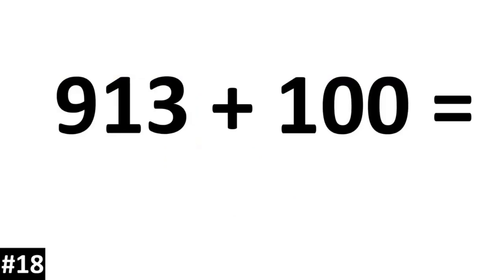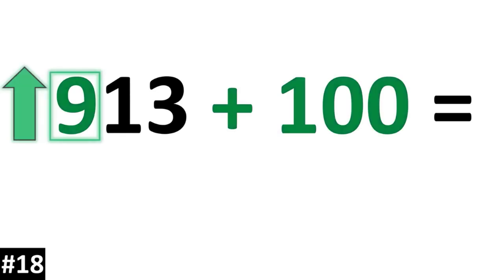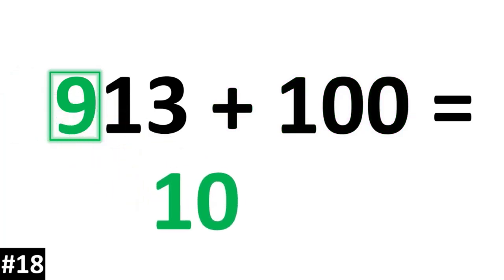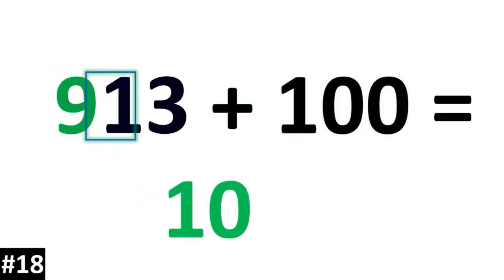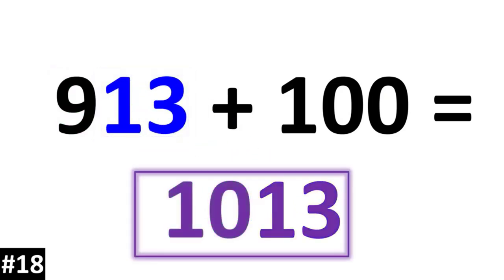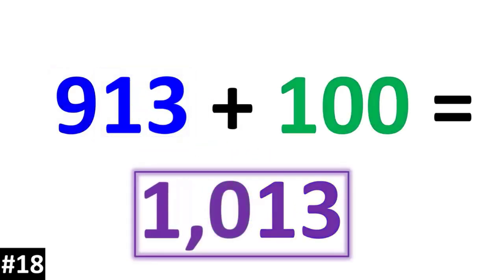913 plus 100. 913 has a hundreds digit of 9. So if we add another 100, that 9 is going to go up to 10. The other numbers stay the same, so we bring down the 13, and we have 1,013.